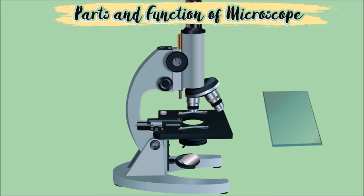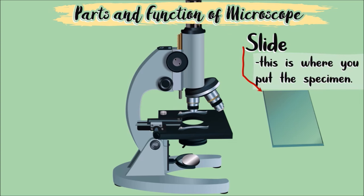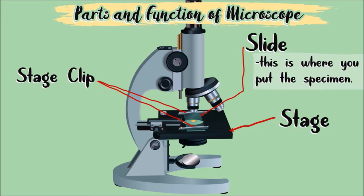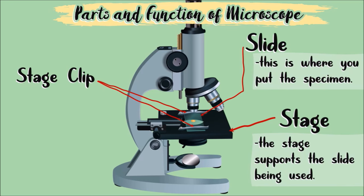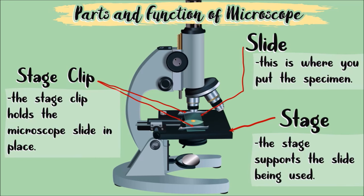This is called slide or microscope slide. This is where you put the specimen or the tiny object you want to observe. And you put it right here. This part of the microscope is called stage, and these two clips are called stage clips. The stage supports the slide being used while the stage clip holds the microscope slide in place.